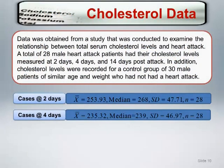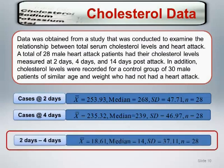Let's return to the cholesterol data and use it to illustrate the calculation of the paired t-test and then the Wilcoxon signed ranks test. We focus solely on the case sample and their observations taken two days and four days post-attack. Our goal is to determine whether cholesterol levels decreased from two days to four days post-attack. The descriptive statistics show that both means and medians decreased over time, with similar standard deviations at both time points. The mean difference is 18.61, the median difference is 14, and the standard deviation of the differences is 37.11.